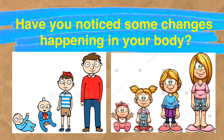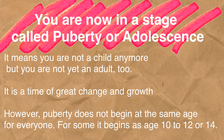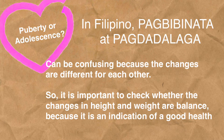Have you noticed some changes happening in your body? You are now in a stage called puberty or adolescence. It means you are not a child anymore but you are not yet an adult either. It is a time of great change and growth. However, puberty does not begin at the same age for everyone — for some it begins as early as age 10 to 12 or 14. Puberty can be confusing because the changes are different for each person.